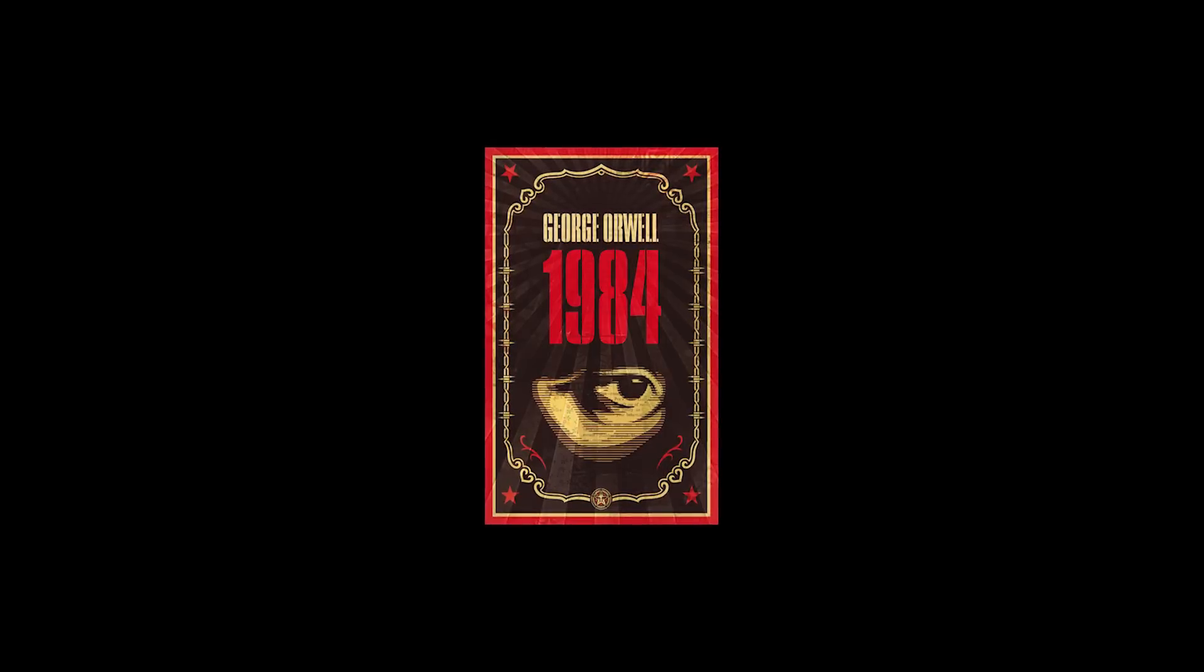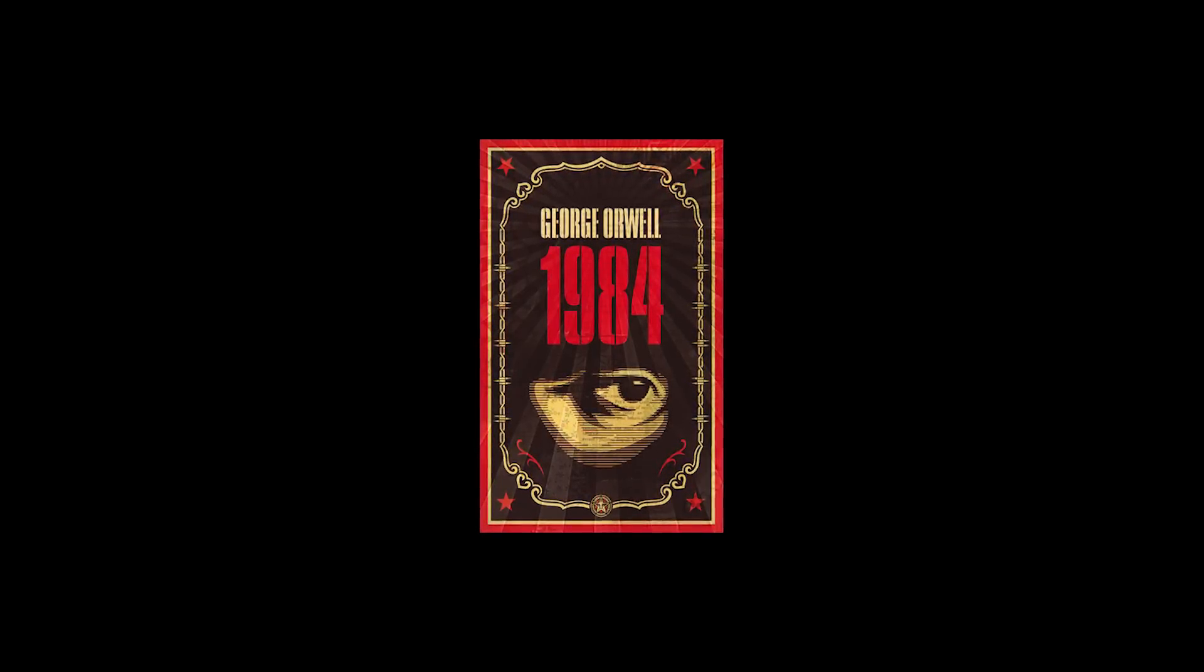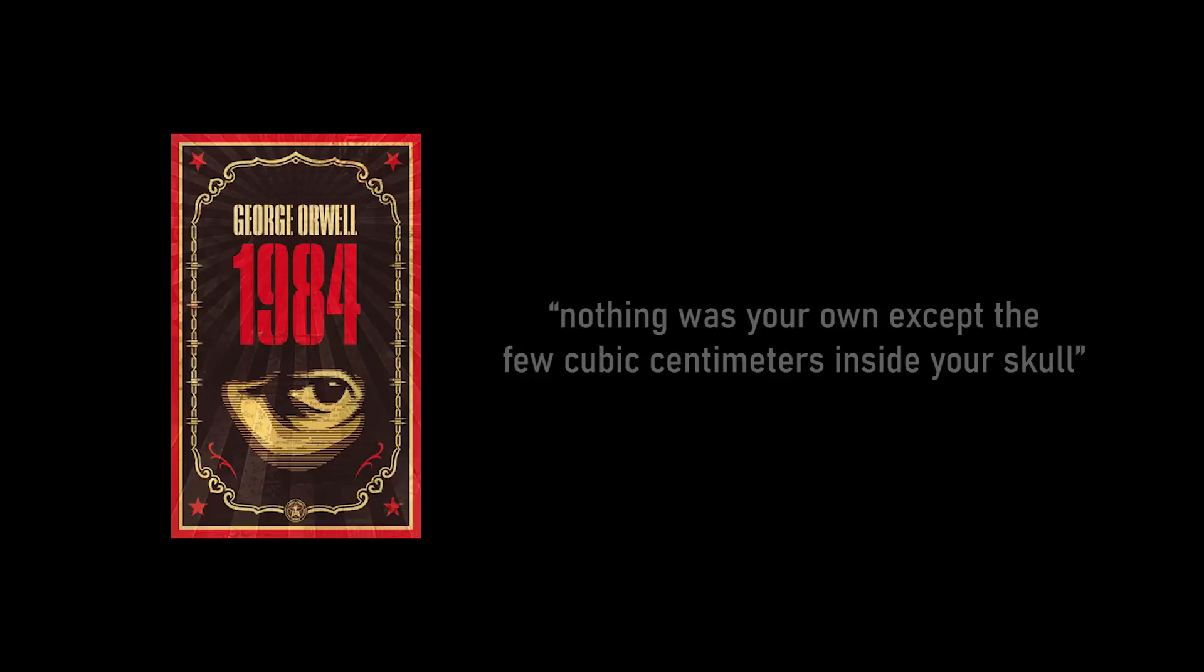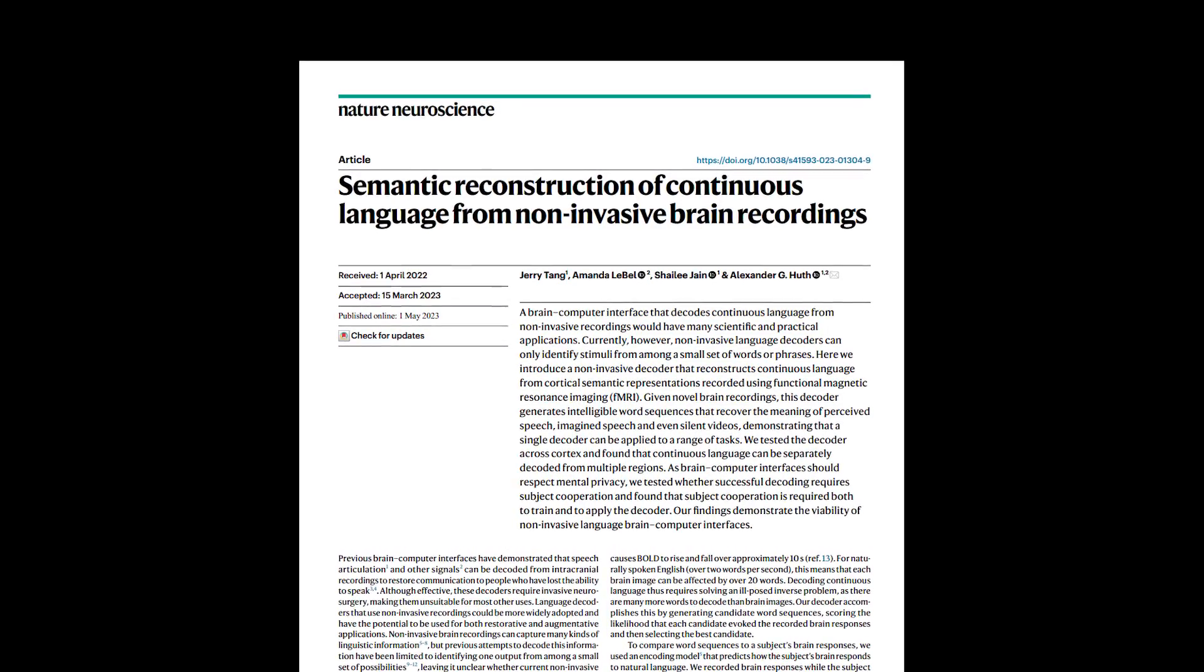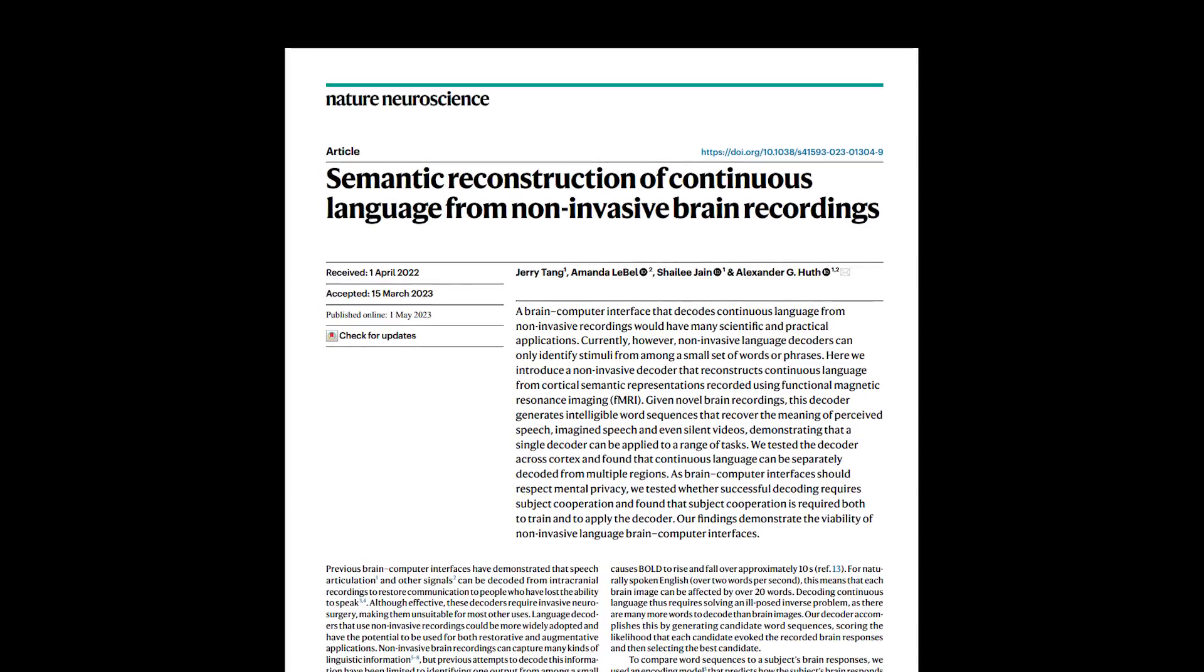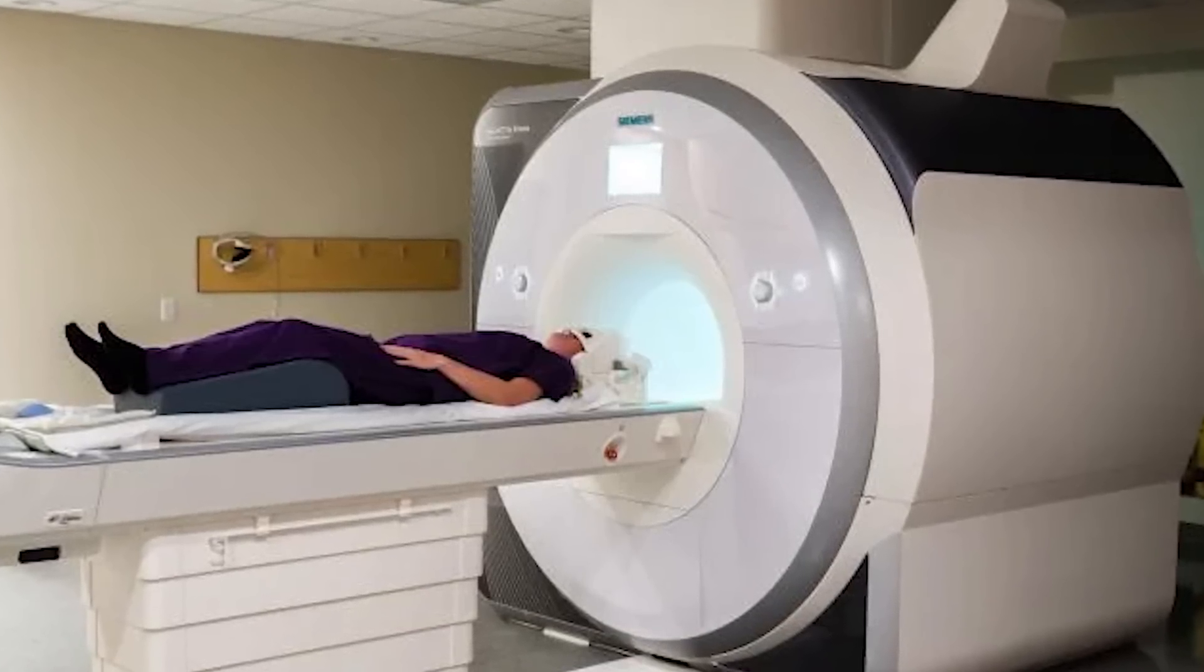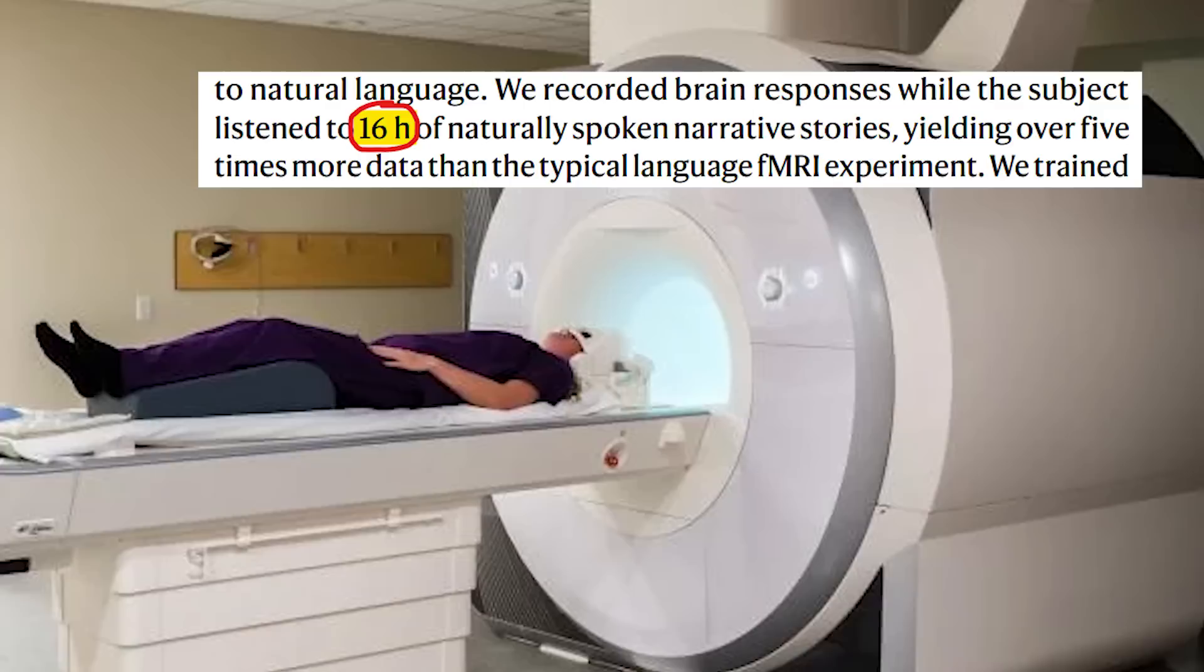In George Orwell's 1984, there's a totalitarian government that monitors what everyone says and does, and the surveillance was so bad that Orwell described it as, nothing was your own except the few cubic centimeters inside your skull. He must not have heard about this 2023 paper where fMRI scans were used to reconstruct what people were hearing and thinking. After getting participants to lay in an fMRI machine for 16 hours while listening to narrated stories,